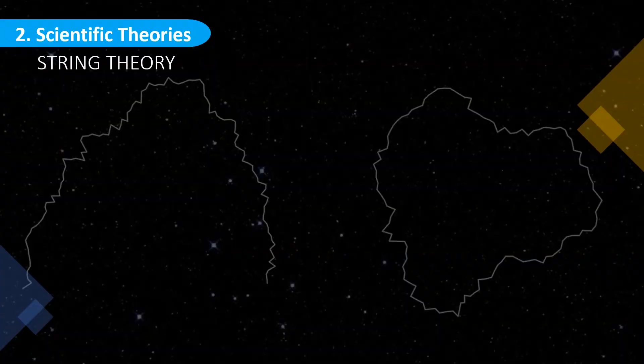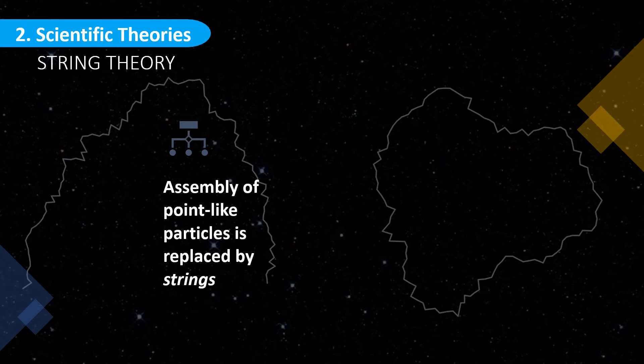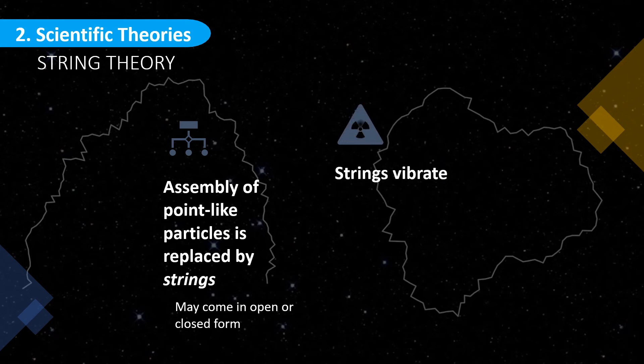In string theory, the assembly of the point-like particles often used in particle physics is replaced by fundamental building blocks called strings, which have dimensions confined to Planck length, which is equivalent to 10 to the negative 35 meters. The string may come in closed or open form, and the strings are free to vibrate at different modes.